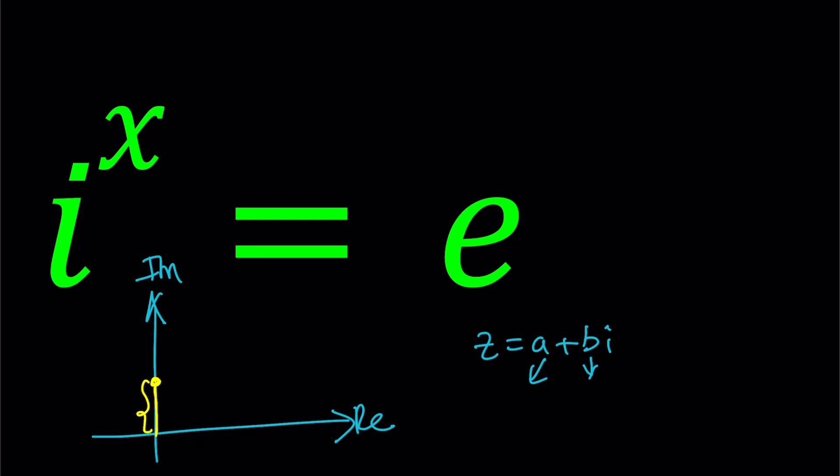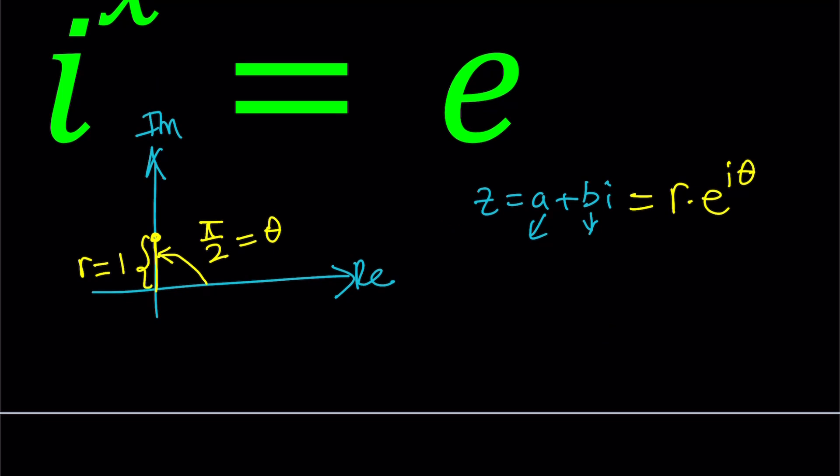Obviously in this case we can talk about a couple different things such as the radius or the modulus or the absolute value which we call r and then the angle or the argument. So in this case the angle is going to be pi over 2. So we can basically write this number as r times e to the power i theta. r equals 1 in this case and theta equals pi over 2 for my number.